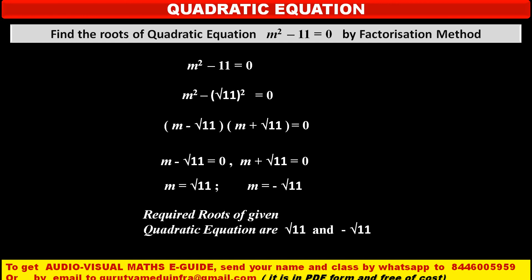Hence, we can say that this quadratic equation has two roots: √11 and -√11. Both the roots are irrational.